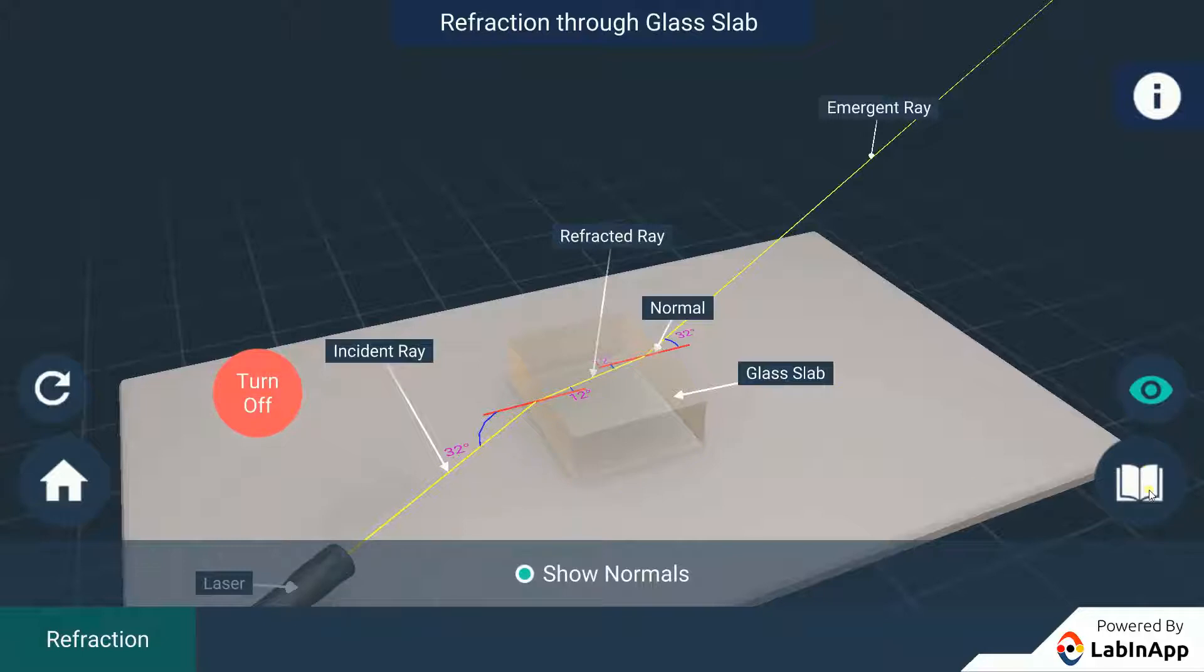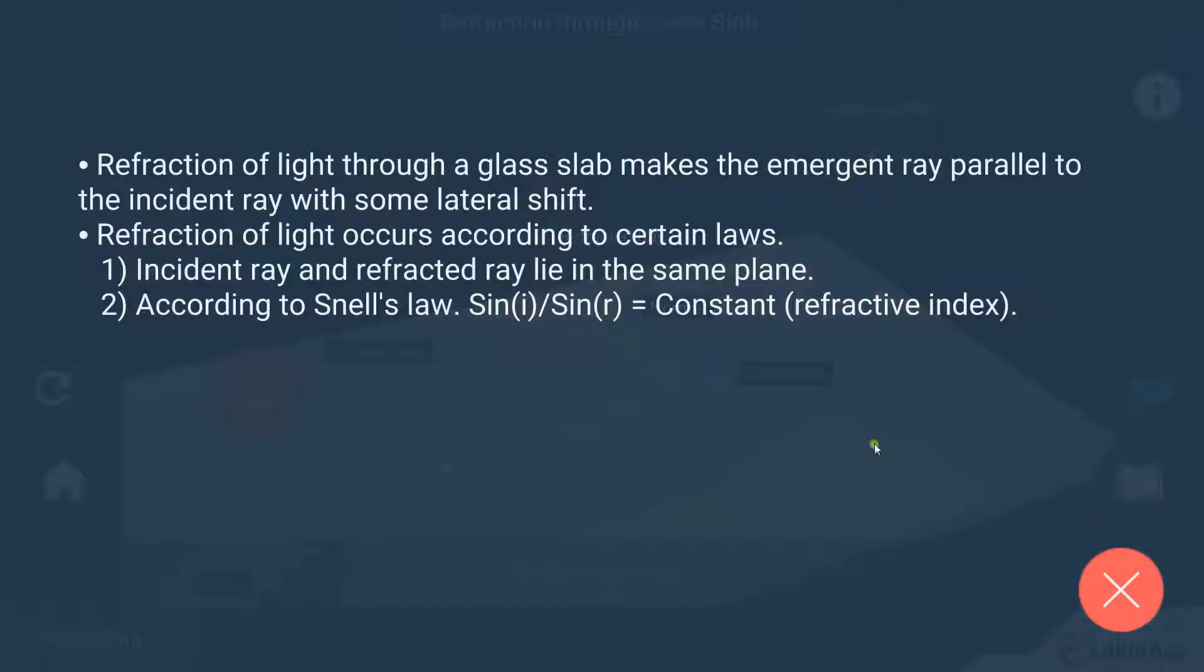If i is the angle of incidence and r is the angle of refraction, then sine i by sine r is equal to constant. This constant value is called the refractive index of the second medium with respect to the first.